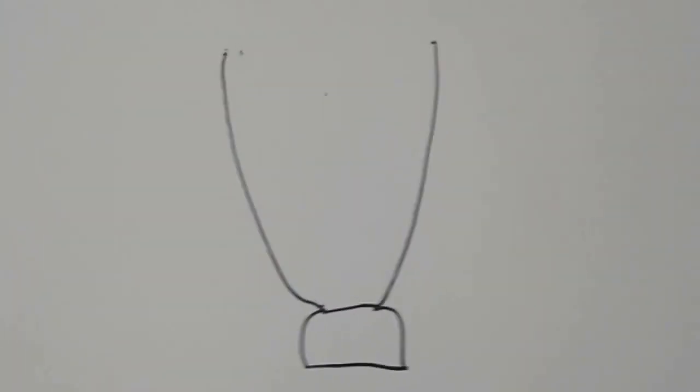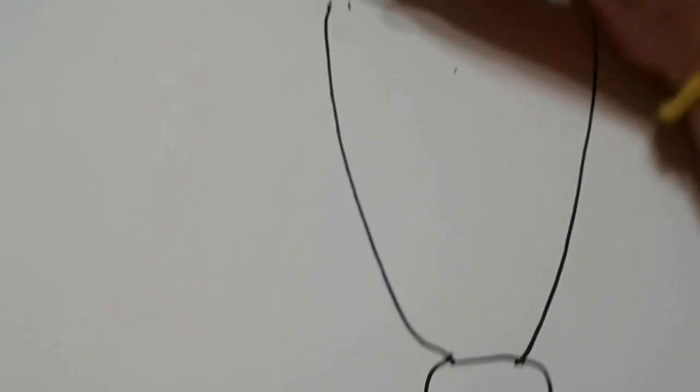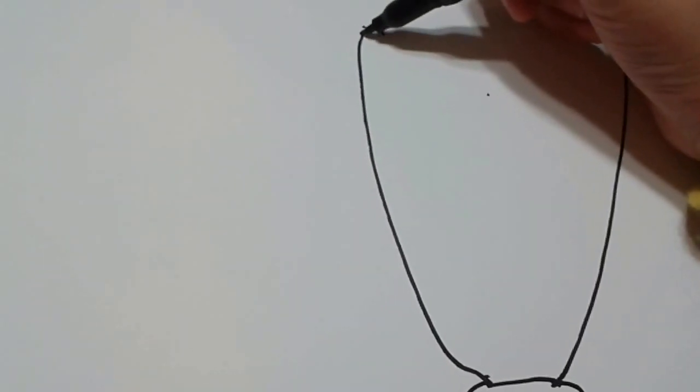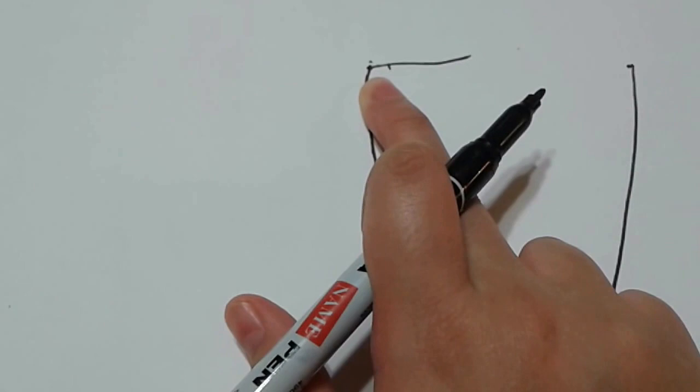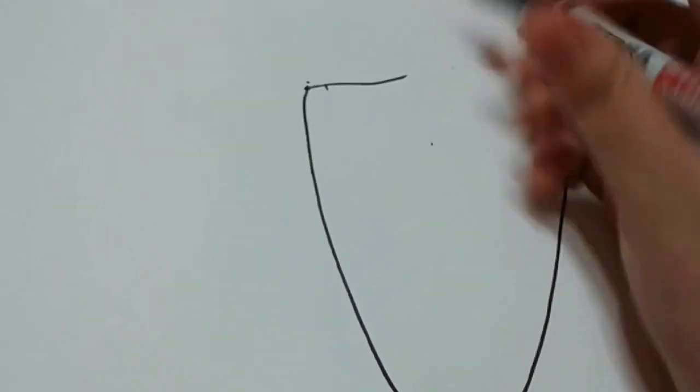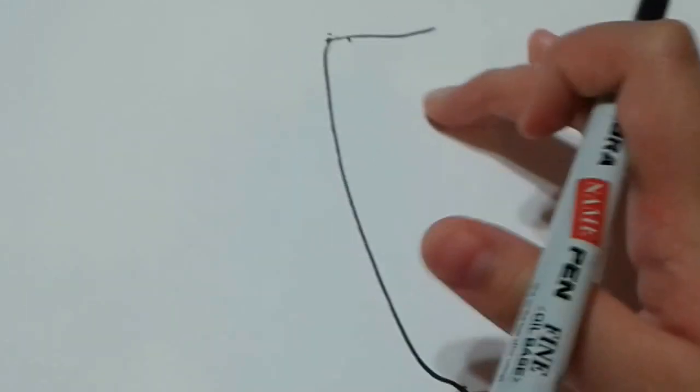So now we're going to draw the top. Just want to draw a straight line there that's really straight. Then because you want to draw the cream flowing. It's overflowing.